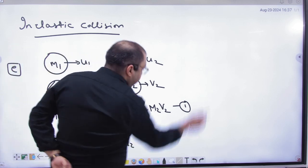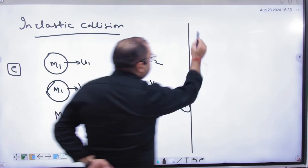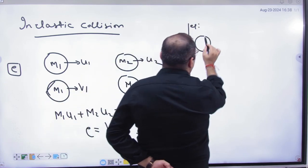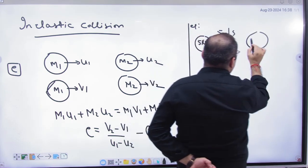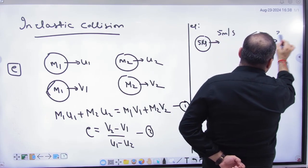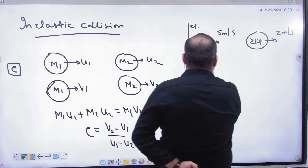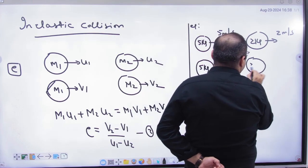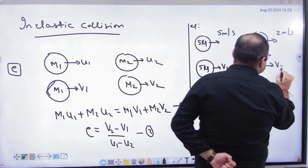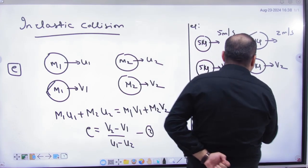For example, suppose one ball is 5 kg, moving with 5 meter per second. Another ball is 2 kg, moving with 2 meter per second. After collision, the 5 kg velocity becomes V1, and the 2 kg velocity becomes V2. And given is coefficient of restitution half. Find V1 and V2.